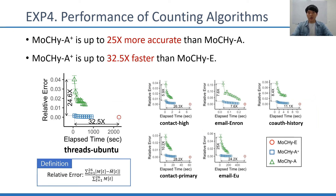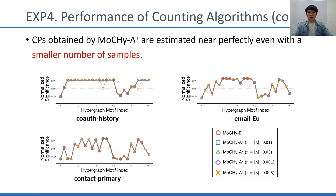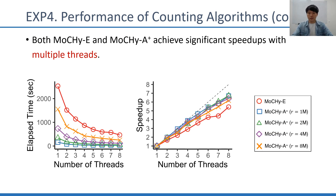We test the speed and accuracy of all versions of Mochi. Mochi-A-plus provides the best tradeoff between speed and accuracy — specifically, it is up to 25 times more accurate than Mochi-A and up to 32.5 times faster than Mochi-E. We compute CPs by Mochi-A-plus with different numbers of samples, and even with a smaller number of samples, CPs are estimated accurately. Mochi is also effectively parallelized, achieving significant speed-ups with multiple threads.